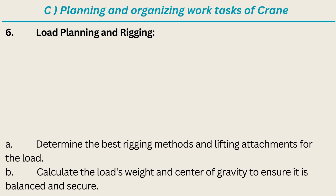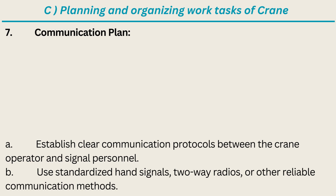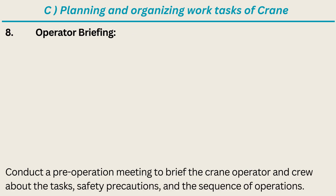Sixth: Load Planning and Rigging — determine the best rigging methods and lifting attachments for the load. Calculate the load's weight and center of gravity to ensure it is balanced and secure. Seventh: Communication Plan — establish clear communication protocols between the crane operator and signal personnel. Use standardized hand signals, two-way radios, or other reliable communication methods. Eighth: Operator Briefing — conduct a pre-operation meeting to brief the crane operator and crew about the tasks, safety precautions, and the sequence of operations.